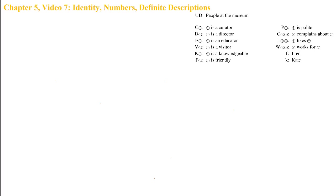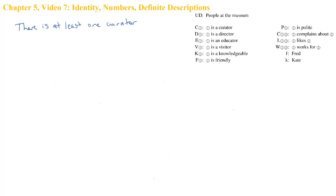What do we do if we want more specific numerical quantification? We need to add an element to our language in order to achieve this. Take this sentence, given the interpretation on the right-hand side: 'There is at least one curator.' This is something we're very used to. It's a simple matter of existential x, cx, and that gets us there's at least one curator.